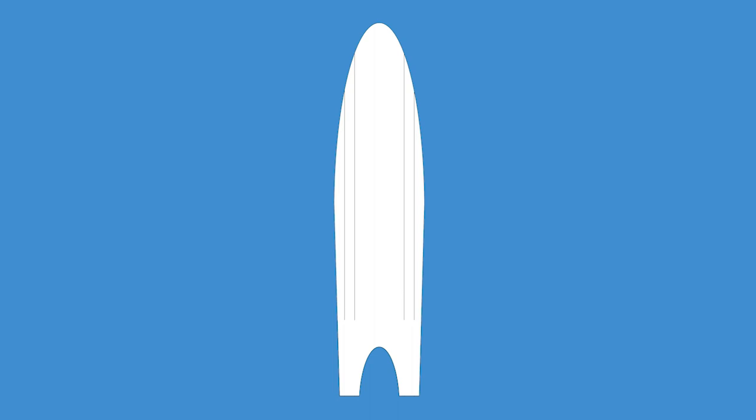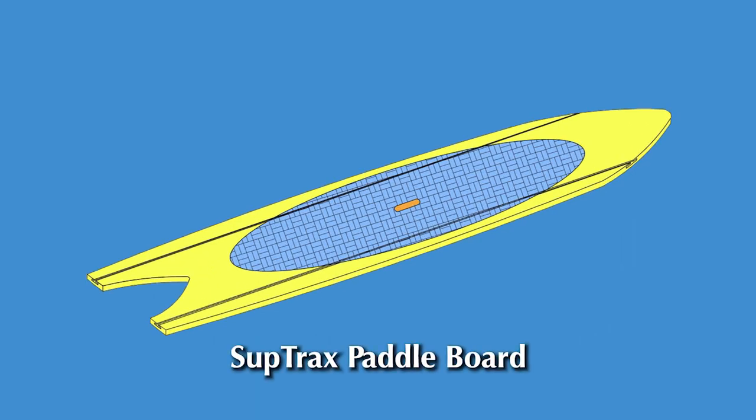To manufacture a Subtrax equipped board, an EPS foam core is custom shaped with two parallel channels cut the length of the board. A layer of fiberglass is applied to seal the core, then the tracks are dropped in and additional layers of fiberglass are applied to finish the board. Affix the deck pad and you now have a Subtrax paddle board.